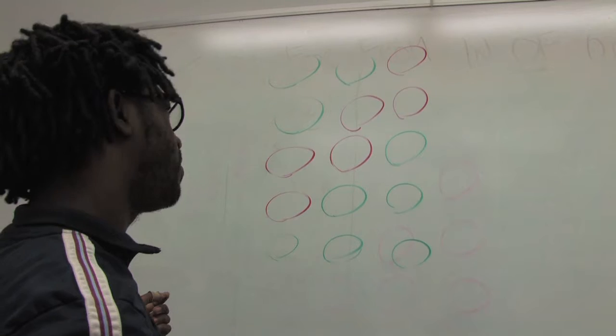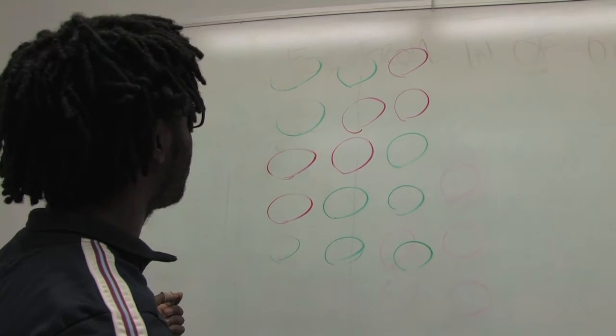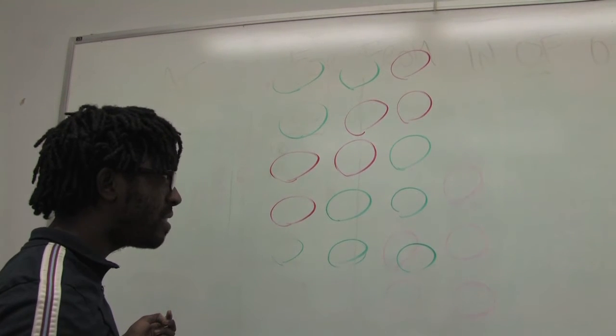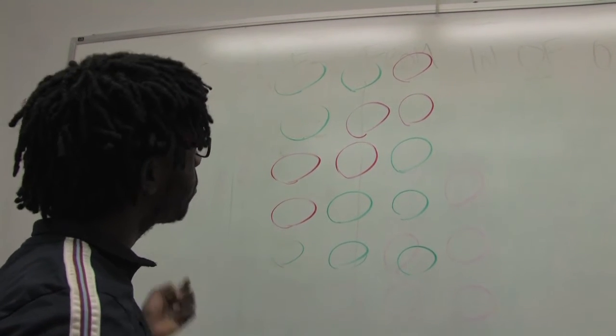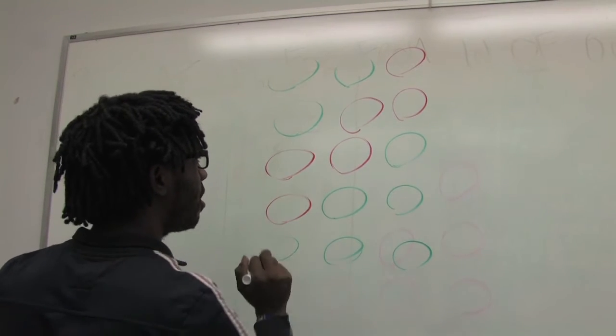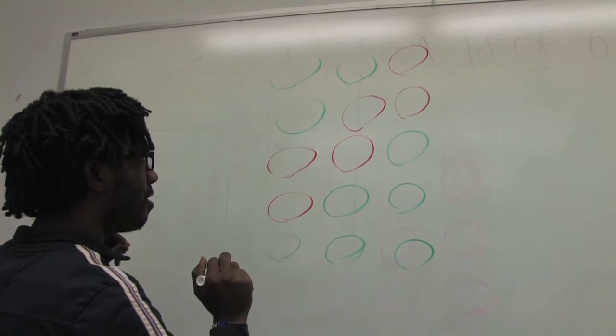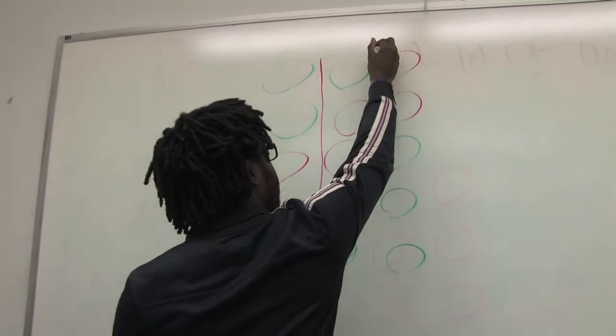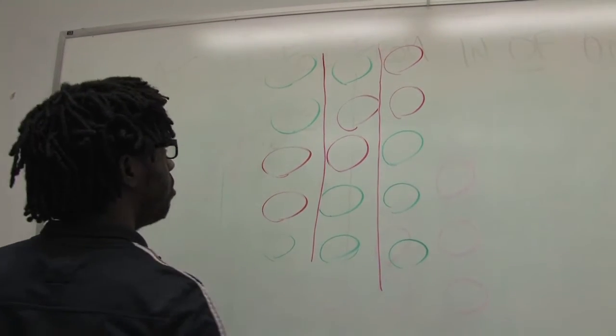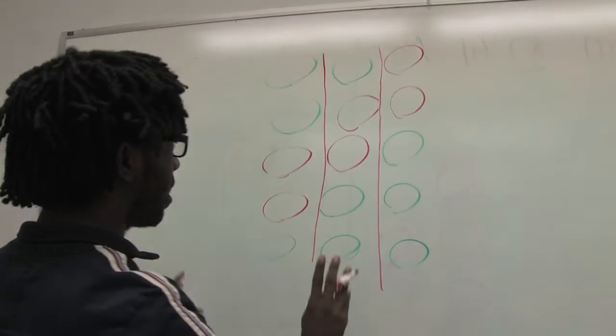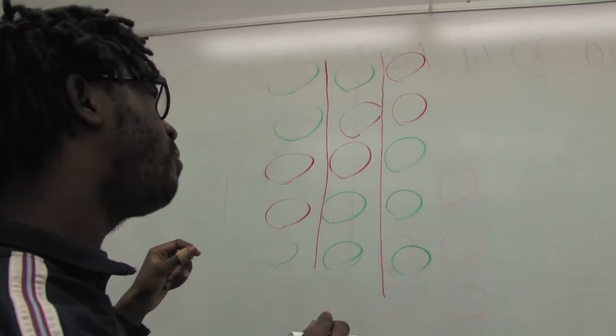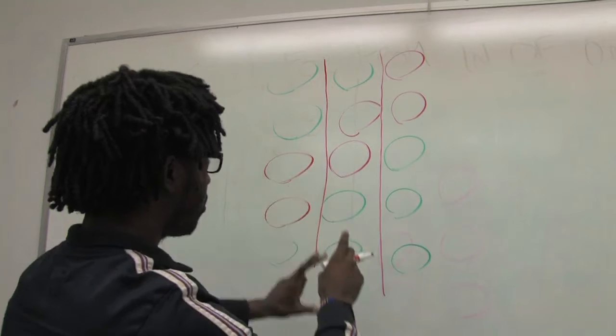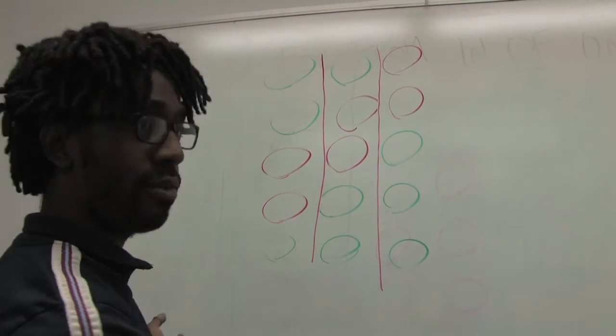So an example of a disproportionate system, a way in which the ward can be drawn to where power is given to one group in favor of another would be to do it simply like this. And I think to most people, when you look at it, it seems fair because there are three totally even districts, or in this case, wards.